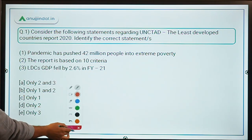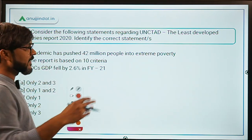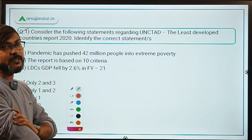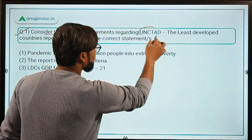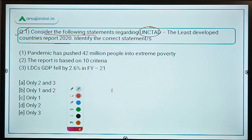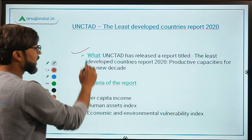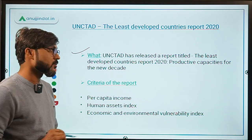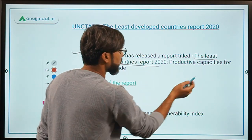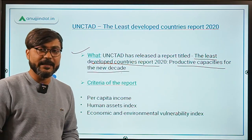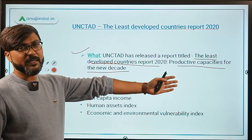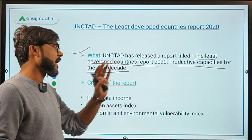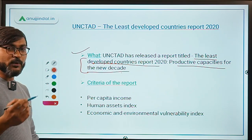Let's begin with the very first question, which is about a report. In today's session we will discuss two different reports; three questions will be based on these two reports and two on government schemes. The question asks you to consider statements regarding the UNCTAD Least Developed Countries Report 2020. Remember the complete title: 'The Least Developed Countries Report 2020: Productive Capacities for the New Decade.'